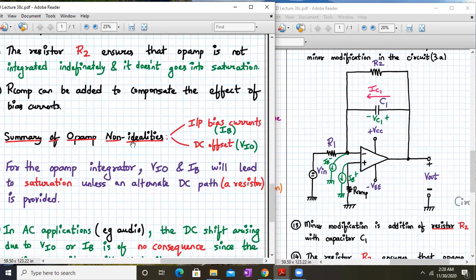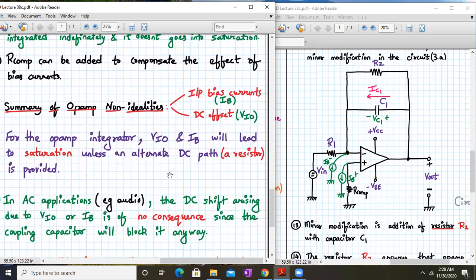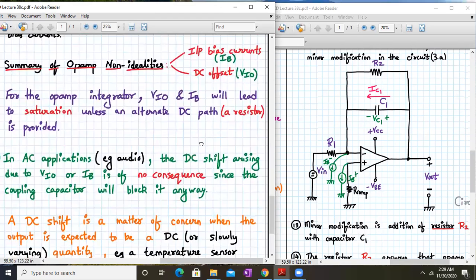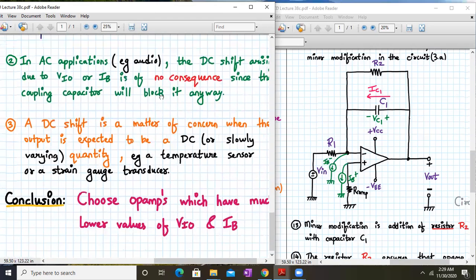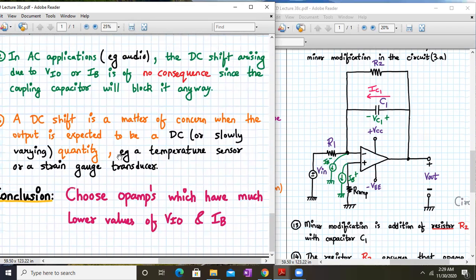The summary of op-amp non-linearities or non-idealities: there are two types, input bias current and dc offset voltage. For the op-amp integrator, vio and ib will lead to saturation unless an alternate dc path appears or is provided. In AC applications, that is audio, the dc shift arising due to vio or ib is of no consequence since the coupling capacitor will block it anyway.